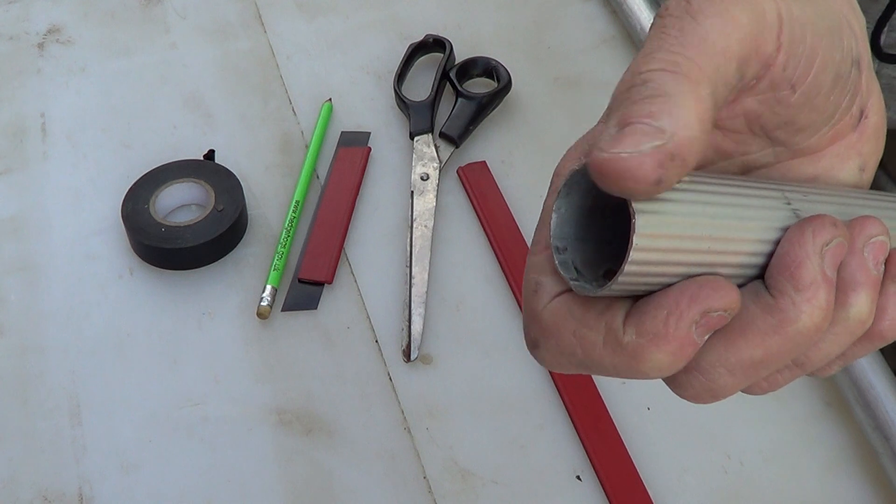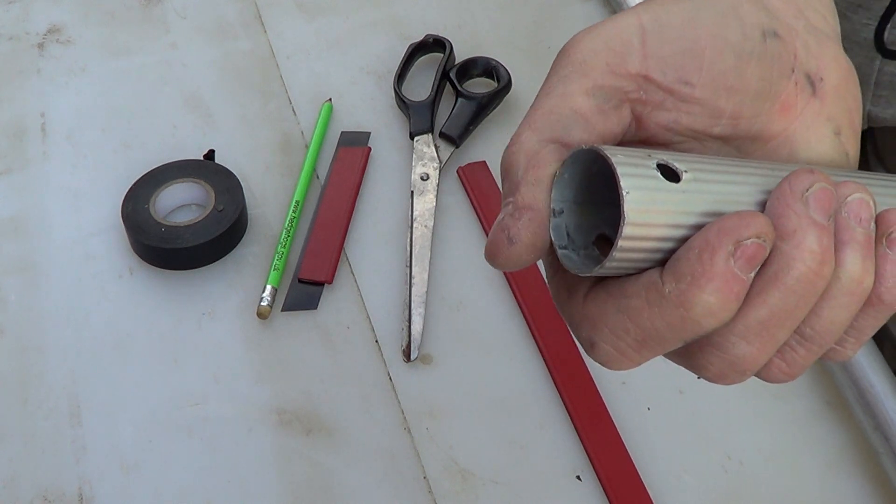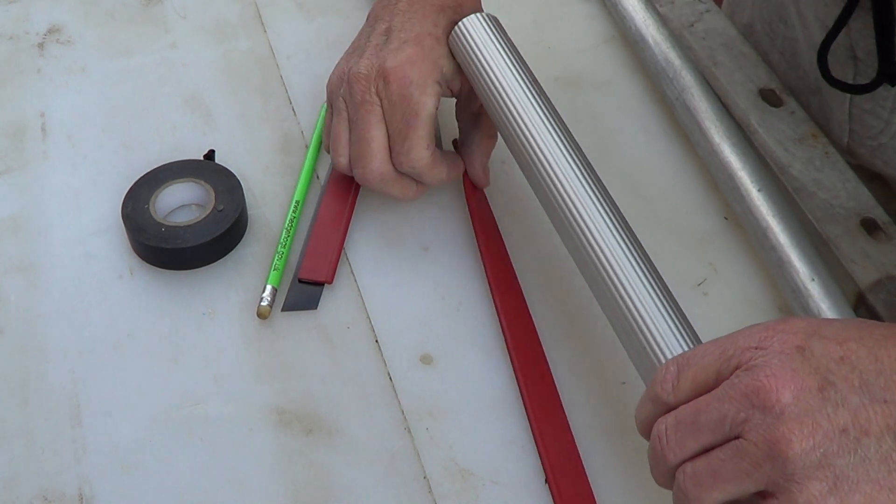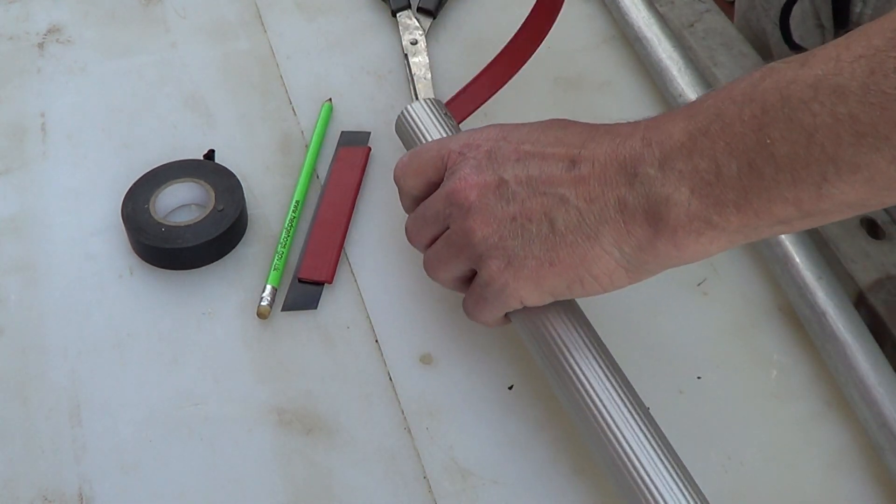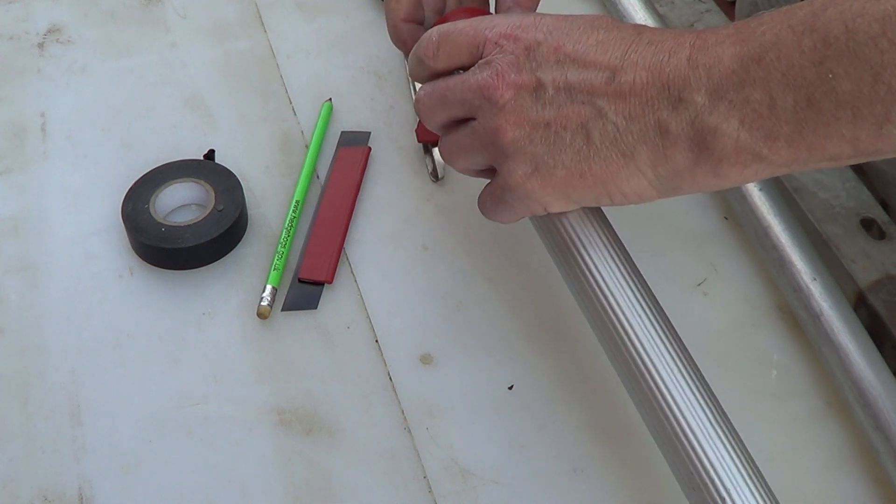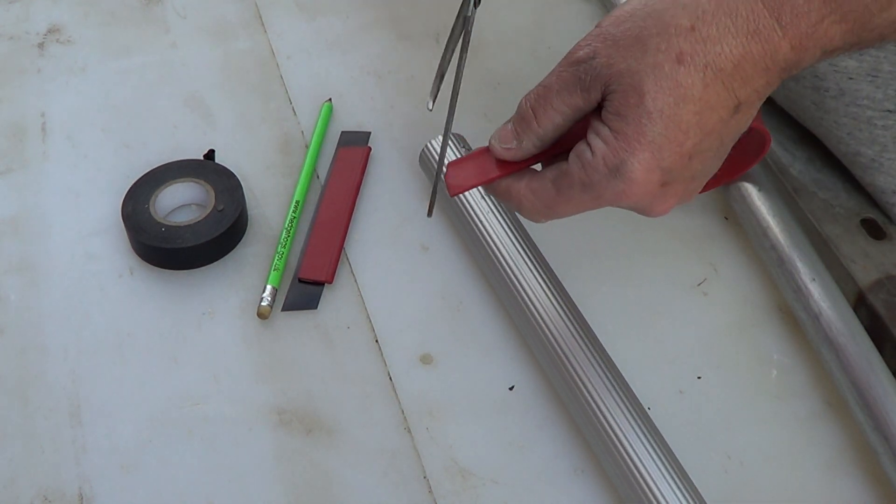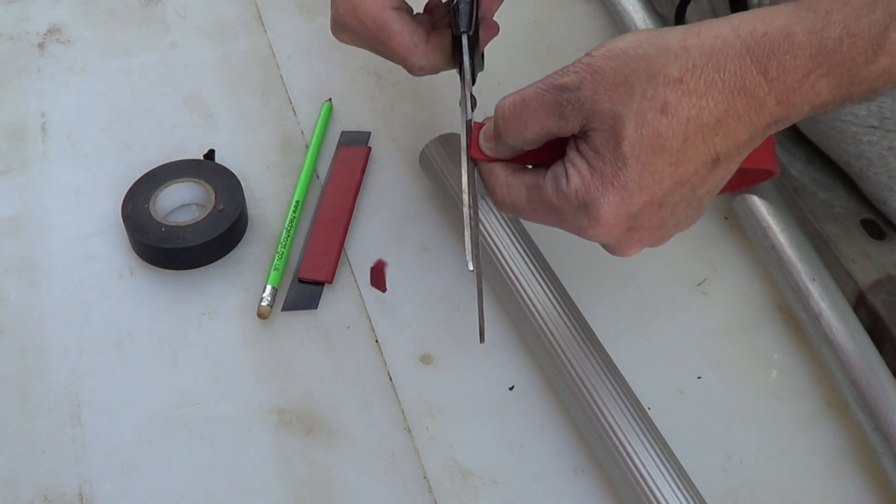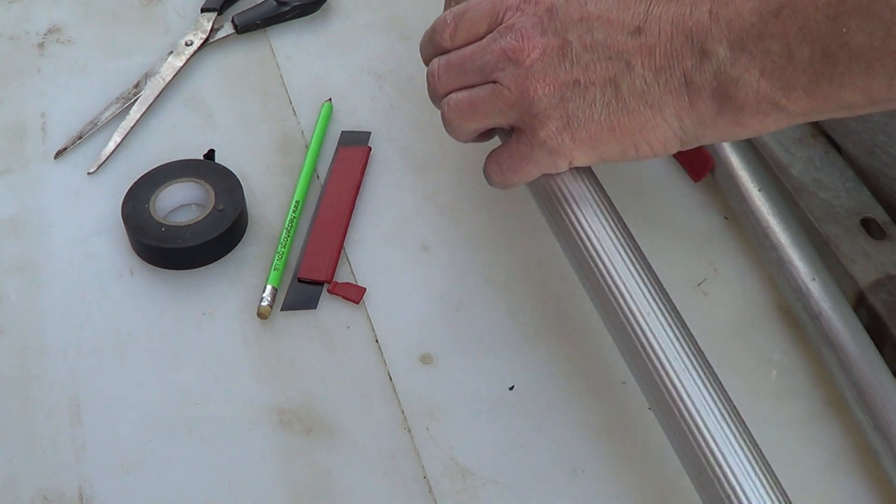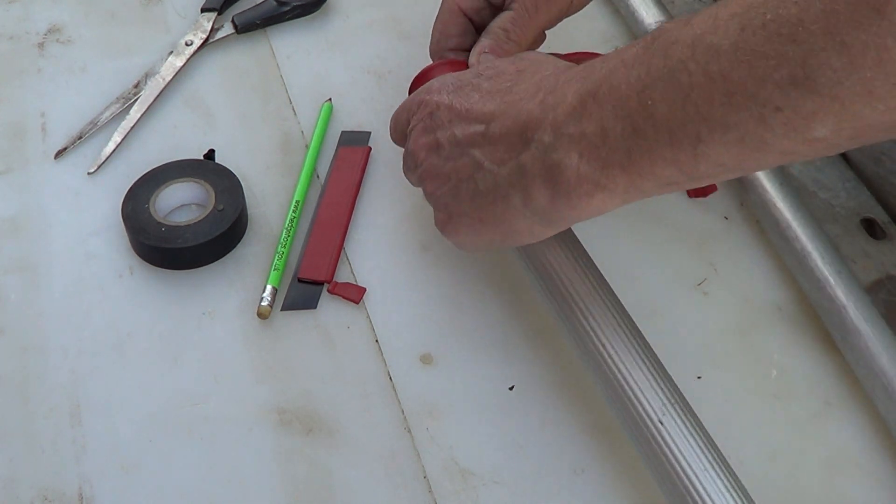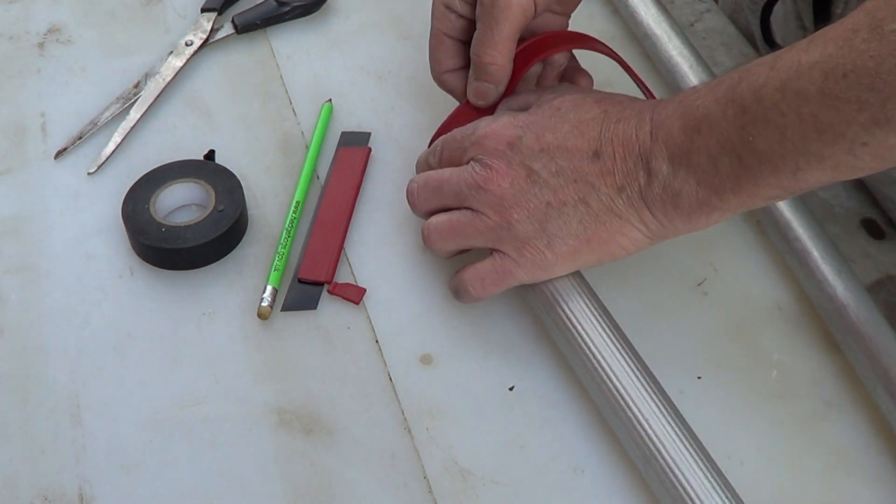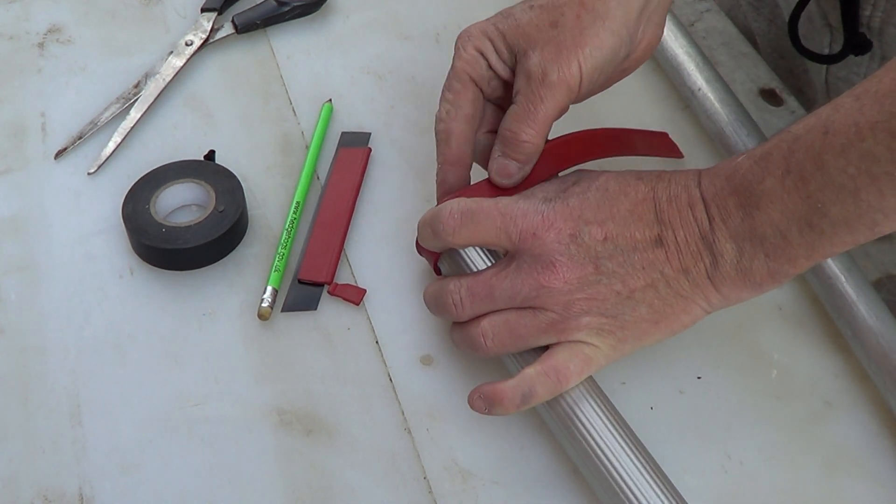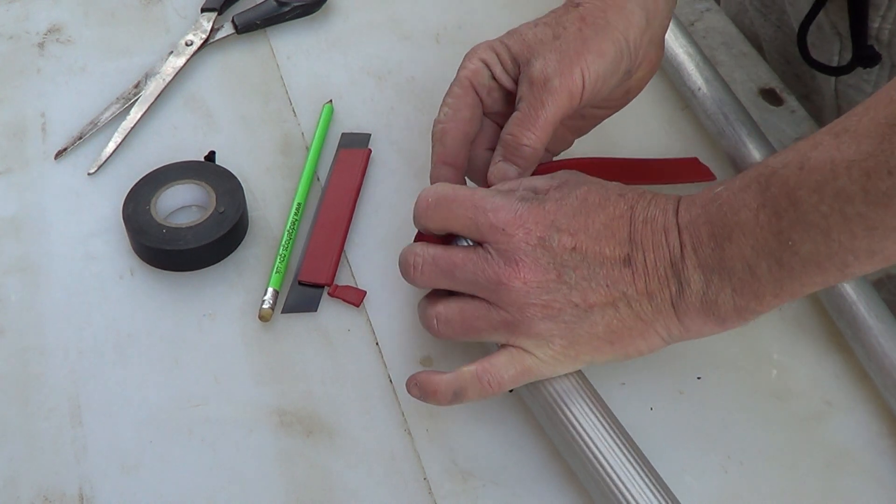Okay, so what I actually did: it's a window clean rubber, all right? Cut the end square first, doesn't have to be absolutely perfect. Wrap it around the end. All you need for this job is some insulation tape, pair of scissors, and a pencil or pen, it doesn't matter.